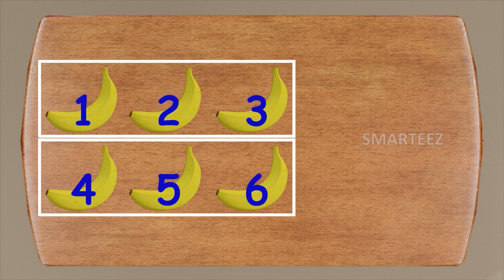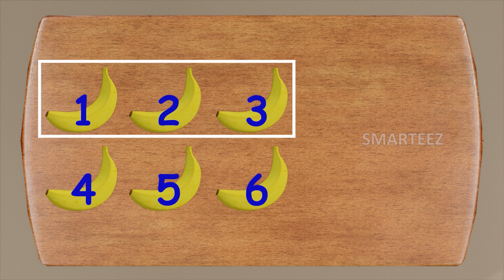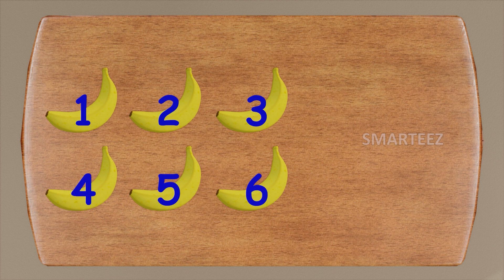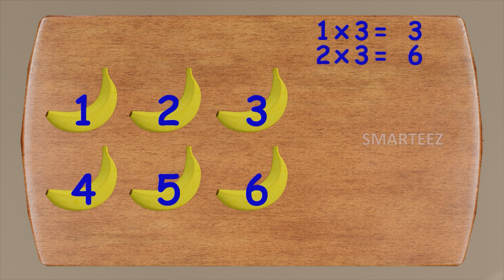Take a look at the table. First, we have three bananas — that's one set of three bananas. Then we have three more bananas — that's the second set of three bananas. So we can call this two sets of three bananas, or two times three bananas. Looking at this way, we can say one times three bananas is three and two times three bananas is six. In fact, it doesn't matter if it's bananas or any other thing. One times three is three and two times three is six.